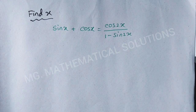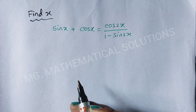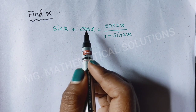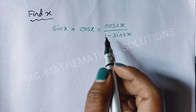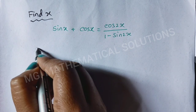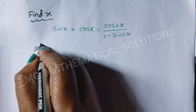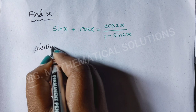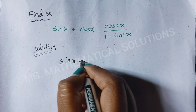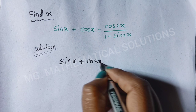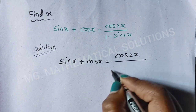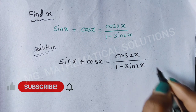Hello students, welcome. We are going to solve a hard trigonometric problem: find x such that sin x plus cos x equals cos 2x over 1 minus sin 2x. Let's see how to solve sin x plus cos x equal to cos 2x over 1 minus sin 2x.